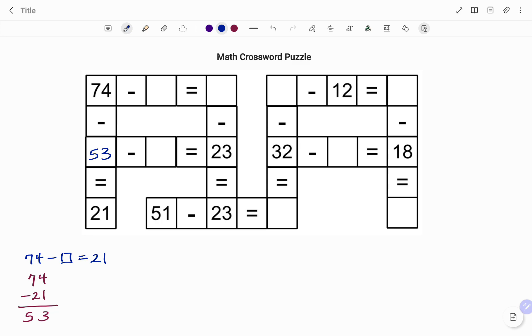Then I have at the bottom 51 takeaway 23. What will that give us? I have to regroup. So I've taken out 1 from 5, that's 4, I have 11. 11 minus 3 will give me 8, then 4 minus 2 will give me 2. So therefore, 51 minus 23 will be 28.